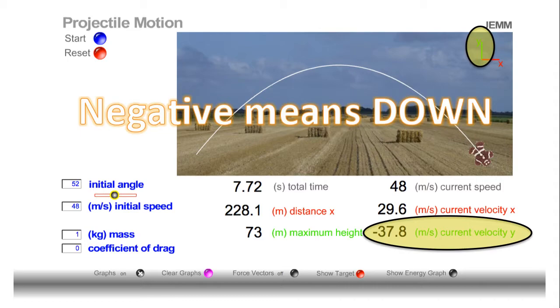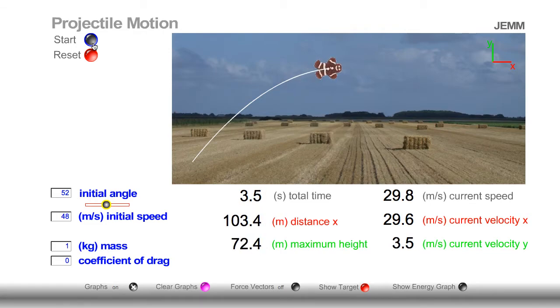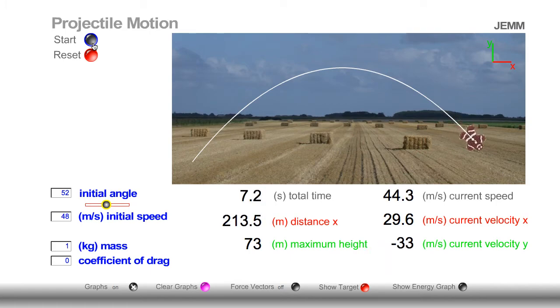So just before impact, the object was moving downwards. Let's focus on current velocity in the Y direction. Notice it's positive while it's going upwards, and negative while it's going downwards. Let's focus in on current velocity in the Y direction when the object hits peak height. Right around... Now! Notice that the current velocity at peak height in the Y direction was zero.